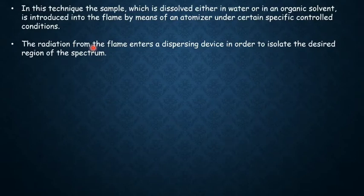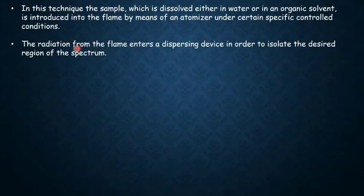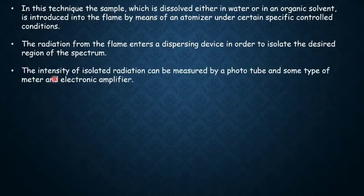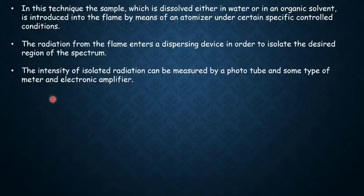After vaporization, dissociation of solid particles occurs to form neutral atoms or free radicals. These atoms then get excited, and after that radiation from the flame enters the dispersing device in order to isolate the desired region of the spectra. The intensity of isolated radiation can be measured by a phototube and some type of meter and electronic amplifier.